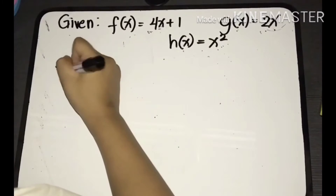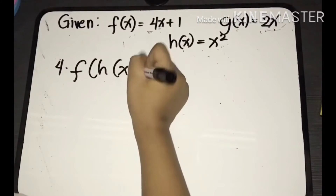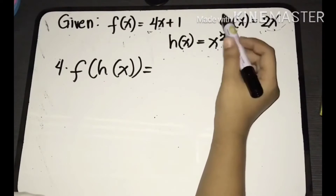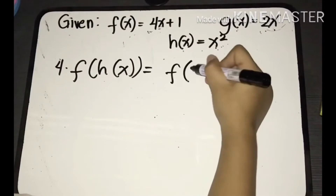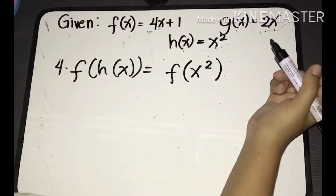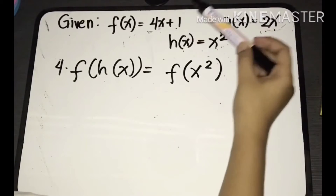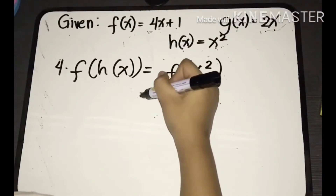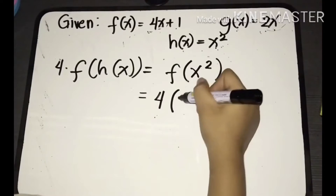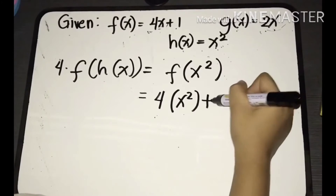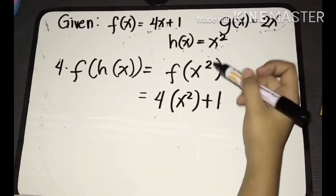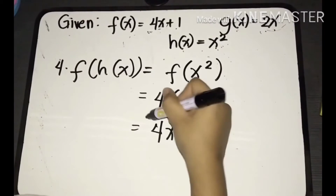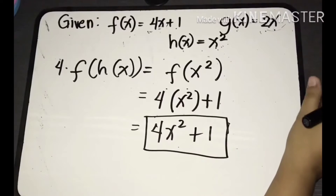For the fourth example, let's find f of h of x. Substitute the function inside the parentheses, which is x squared. Copy f, substituting the value of h of x — x squared. The function f has variable x, and we substitute x squared into it. So we have 4 times x squared plus 1. Multiplying gives 4x squared plus 1. That is the answer for f of h of x.